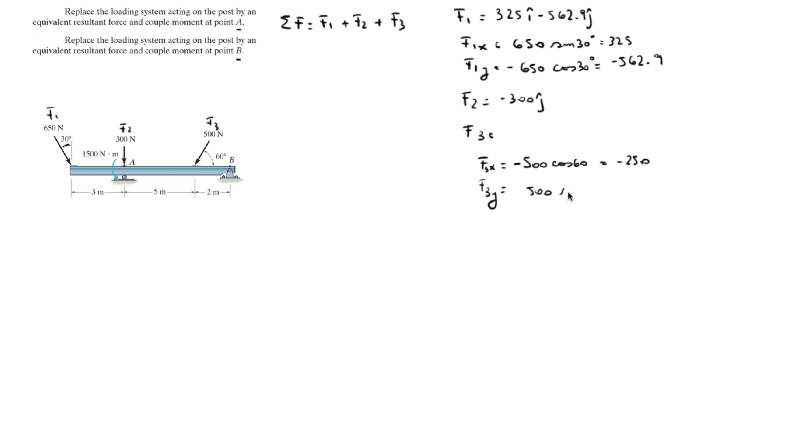And 500 times the sine of 60, and it's negative because it's going down. So this is negative 250 in the i minus 433 in the j.